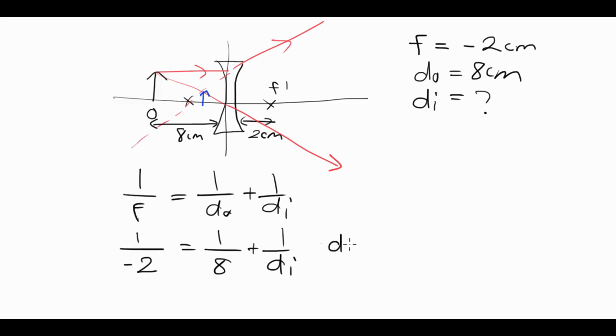And that gives us an answer of negative one point six. So di is equal to negative one point six. Checking this out in the diagram, di is less than do, the object distance. That makes sense. Looking at the diagram, my image is located quite close to the lens. And the negative sign tells us that it is a virtual image, which is also what I would have expected. So one point six centimeters.